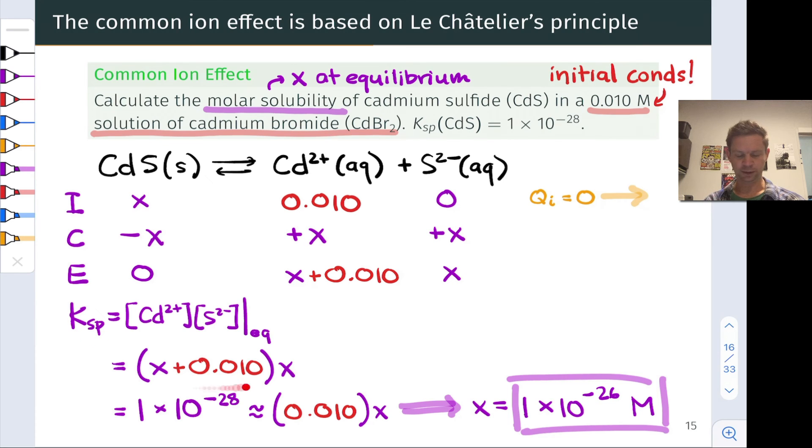And so we would end up with Ksp equals x squared, and thus x is equal to the square root of Ksp, and that comes out to 1 times 10 to the negative 14th moles per liter.